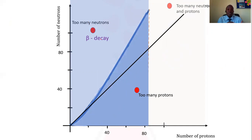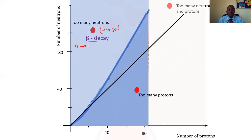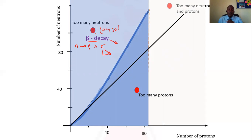Starting with the region of too many neutrons: atoms in this region have far more neutrons than protons — for example, around 102 neutrons to 30-something protons. As such, they will undergo beta decay, where a neutron converts to a proton and a high-energy electron, which is a beta particle. Beta decay favors atoms with too many neutrons, moving them in the direction of the stability belt — a decrease in neutrons accompanied by an increase in protons.